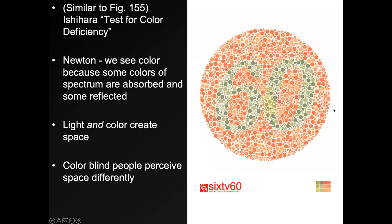If you're colorblind, you're looking at this image right now and you don't see anything at all. If you can see color, you'll see a number 60 in green in the middle. Scientists, when they've looked at color, have made a lot of changes over the years as far as how they theorize it. In the 17th century, Isaac Newton said we see color because some colors of the spectrum are absorbed and some are reflected — and that's pretty close to how we see color when looking at surfaces.